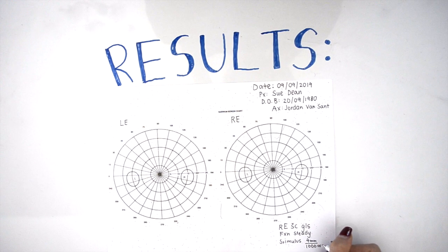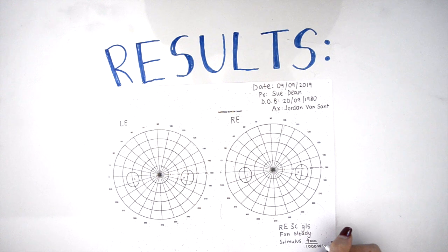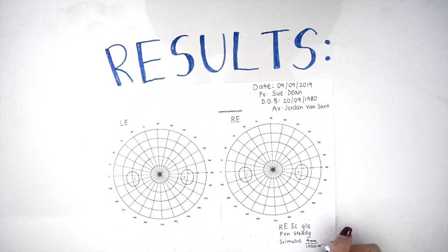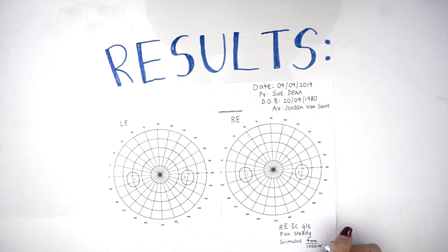The size and the color is recorded as well as the testing distance in a fraction. The fraction consists of the numerator being the stimulus size in millimeters and the denominator being the distance in millimeters as well, with the first letter of the color being written besides the distance.